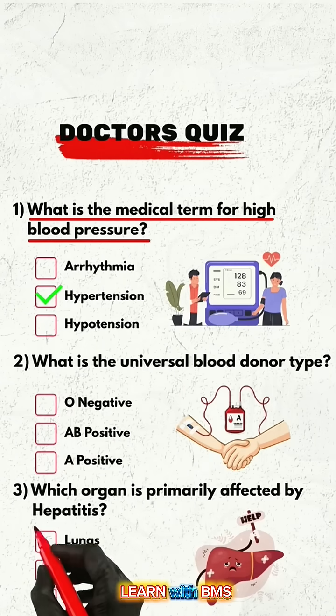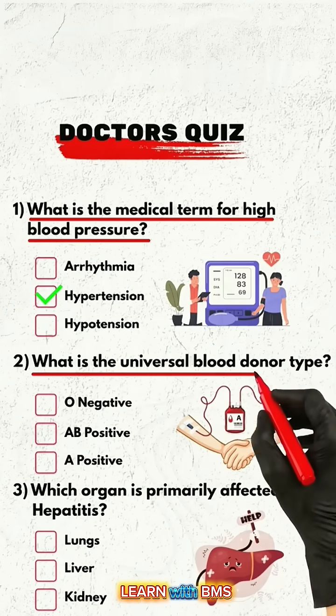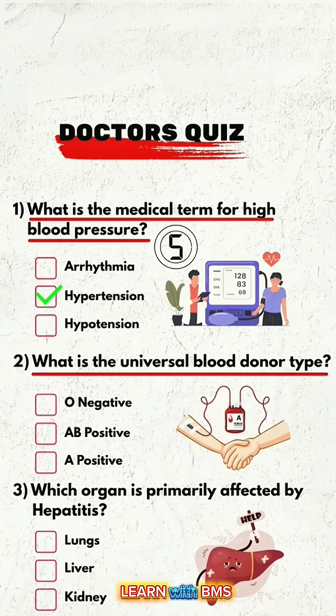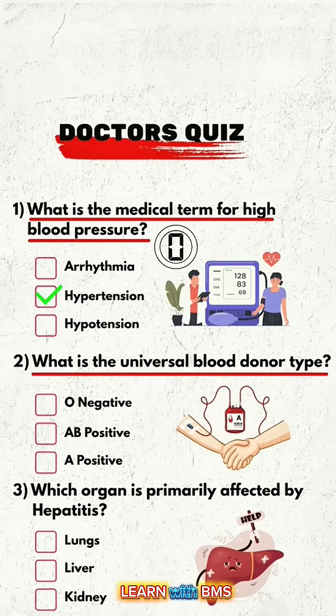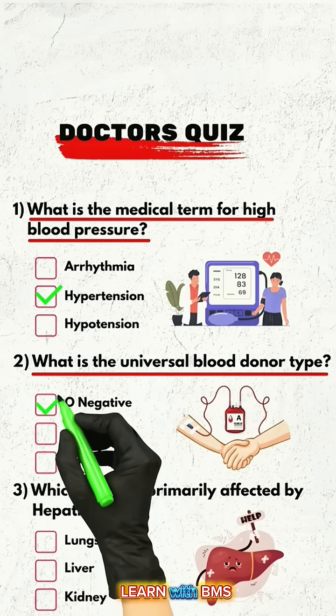Question 2: What is the universal blood donor type? The correct answer is O-.